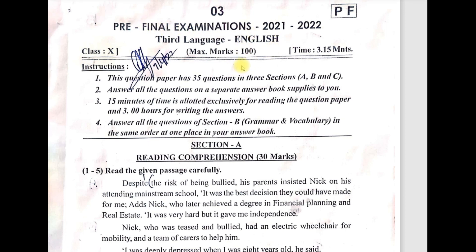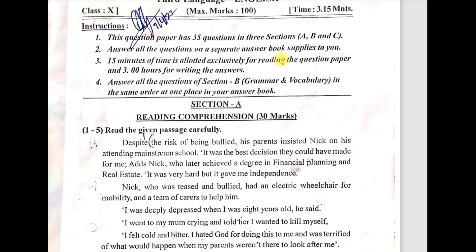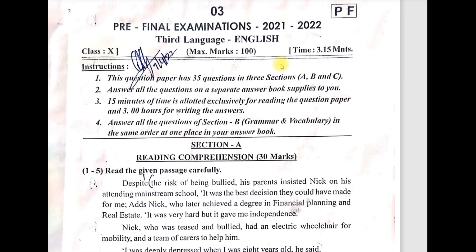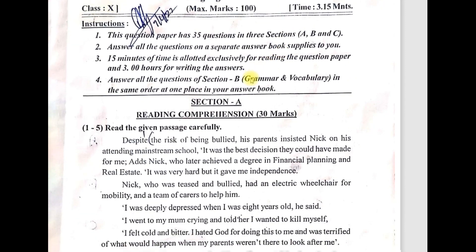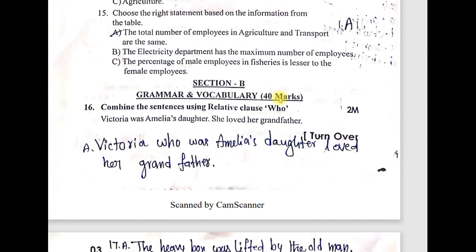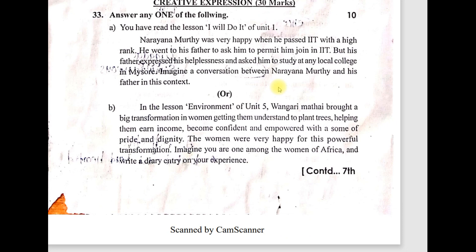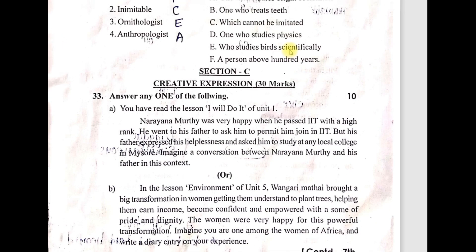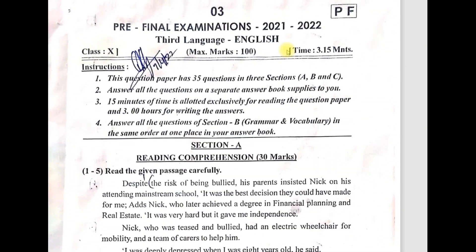In this pre-final examination, this question paper has 100 marks. There are 3 hours and 15 minutes time given. These are the instructions — 15 minutes extra time is given to read the question paper. Students should first read it carefully and then attempt answers. Section A is for 30 marks, Section B is 40 marks with grammar and vocabulary, and Section C is 30 marks — so 30 plus 40 plus 30 equals totally 100 marks.